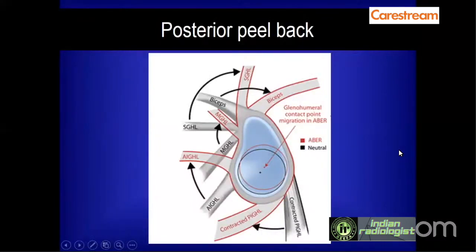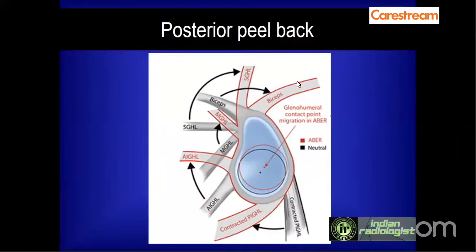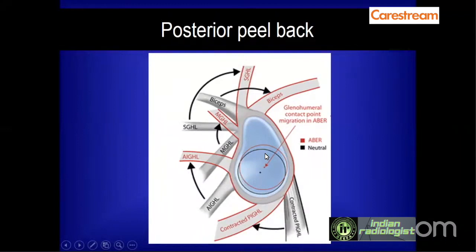The posterior peel back lesion results from habitual abduction and external rotation in various sports activities. Normally, when the humeral head rotates into the glenoid, it has a concentric relationship with the center of the glenoid. In subjects accustomed to vigorous abduction-external rotation movements, there is chronic thickening of the posterior joint capsule and the posterior band of the inferior glenohumeral ligament, causing asymmetrical forces on the humeral head. The humerus then loses its concentric relationship with the glenoid.